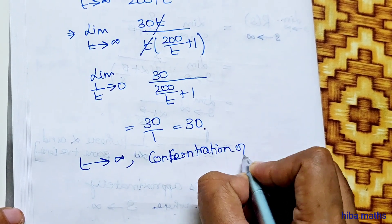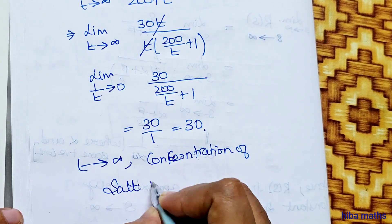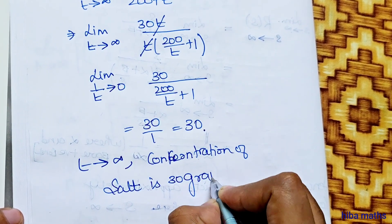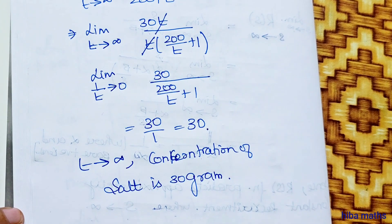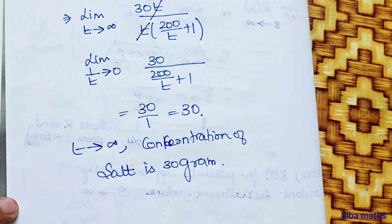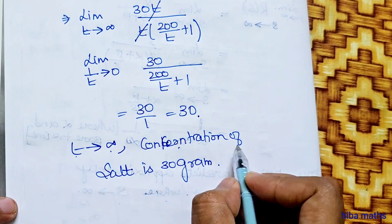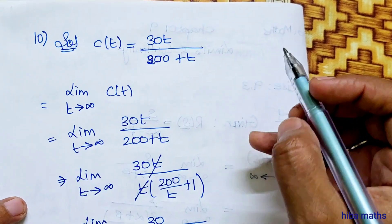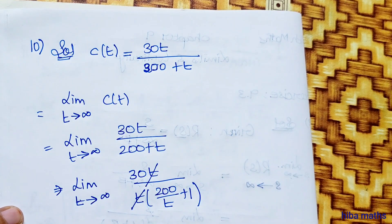Therefore, as t tends to infinity, the concentration of salt approaches 30 grams per liter.